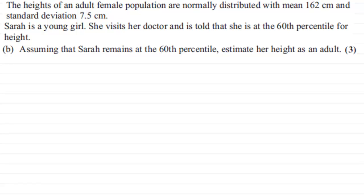Okay, let's see how you got on. Well, just to recap from earlier, the heights of an adult female population are normally distributed with a mean of 162 centimeters and standard deviation 7.5 centimeters.